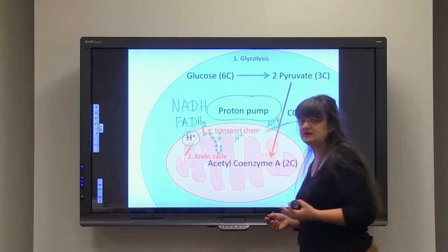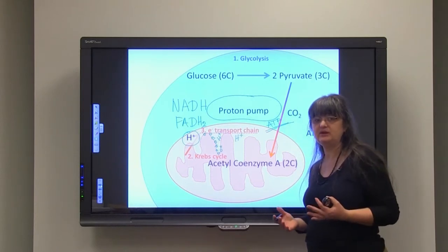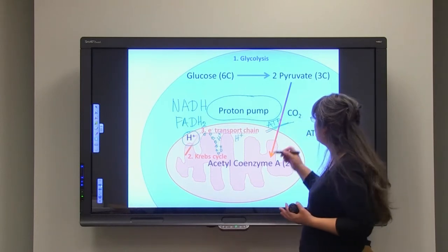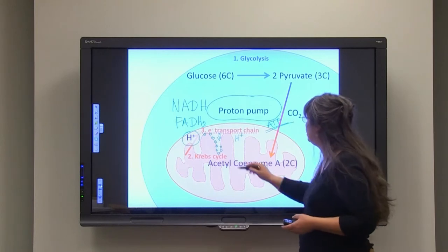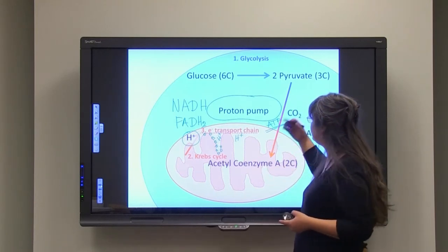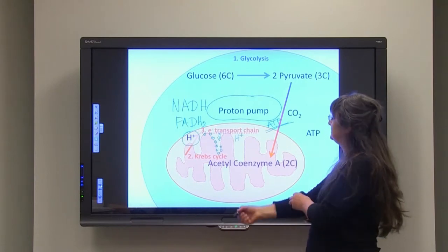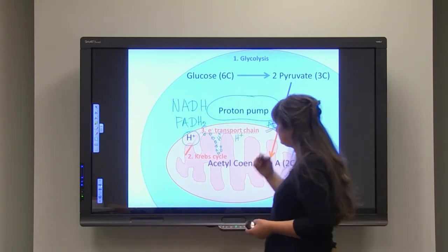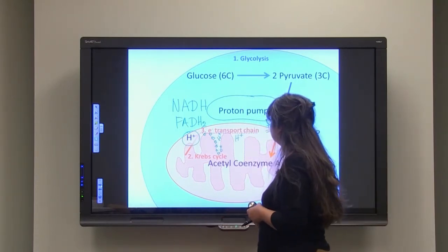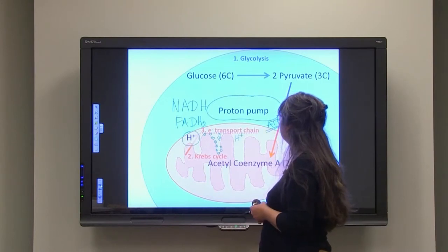So 34 ATPs are actually made per one glucose molecule right here. And the oxygen is the final acceptor of the potential on the electrons.